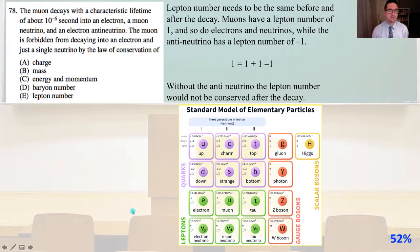78. The muon decays with a characteristic lifetime of about 10 to the minus 6 seconds into an electron, a muon neutrino, and an electron anti-neutrino. The muon is forbidden from decaying into an electron in just a single neutrino by the law of conservation of. We have a presentation of the standard model of elementary particle physics. We can use this to know that a lepton number needs to be the same before and after the decay. Muons have a lepton number of 1, and so do electrons and neutrinos, while the anti-neutrino has a lepton number of minus 1. So we have 1 equals 1 plus 1 minus 1. Without the anti-neutrino, the lepton number would not be conserved after the decay.